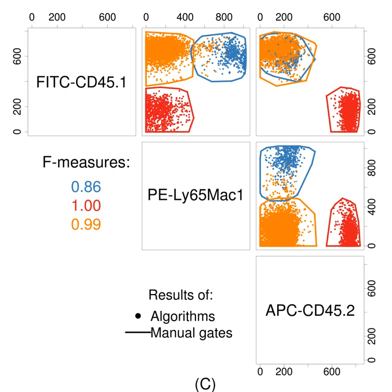When more than one fluorochrome is used with the same laser, their emission spectra frequently overlap. Each particular fluorochrome is typically measured using a bandpass optical filter set to a narrow band at or near the fluorochrome's emission intensity peak. The result is that the reading for any given fluorochrome is actually the sum of that fluorochrome's peak emission intensity and the intensity of all other fluorochrome's spectra where they overlap with that frequency band. This overlap is termed spillover, and the process of removing spillover from flow cytometry data is called compensation. Compensation is typically accomplished by running a series of representative samples each stained for only one fluorochrome, to give measurements of the contribution of each fluorochrome to each channel.